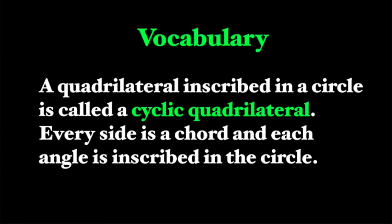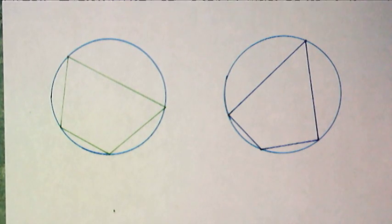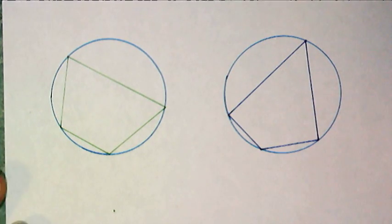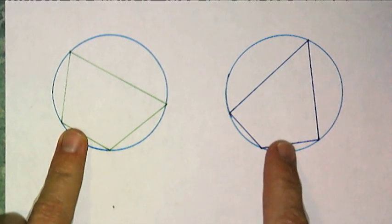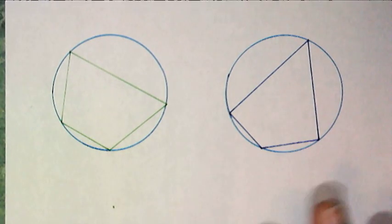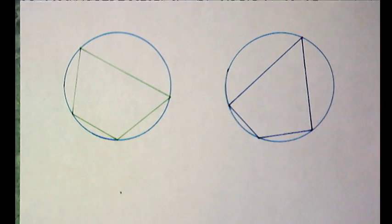So the next word is a cyclic quadrilateral. A quadrilateral inscribed in a circle is called a cyclic quadrilateral. Every side is a chord and each angle is inscribed in the circle. So let's take a look at some cyclic quadrilaterals. These two are both cyclic quadrilaterals. Notice there's nothing really special about their shapes.